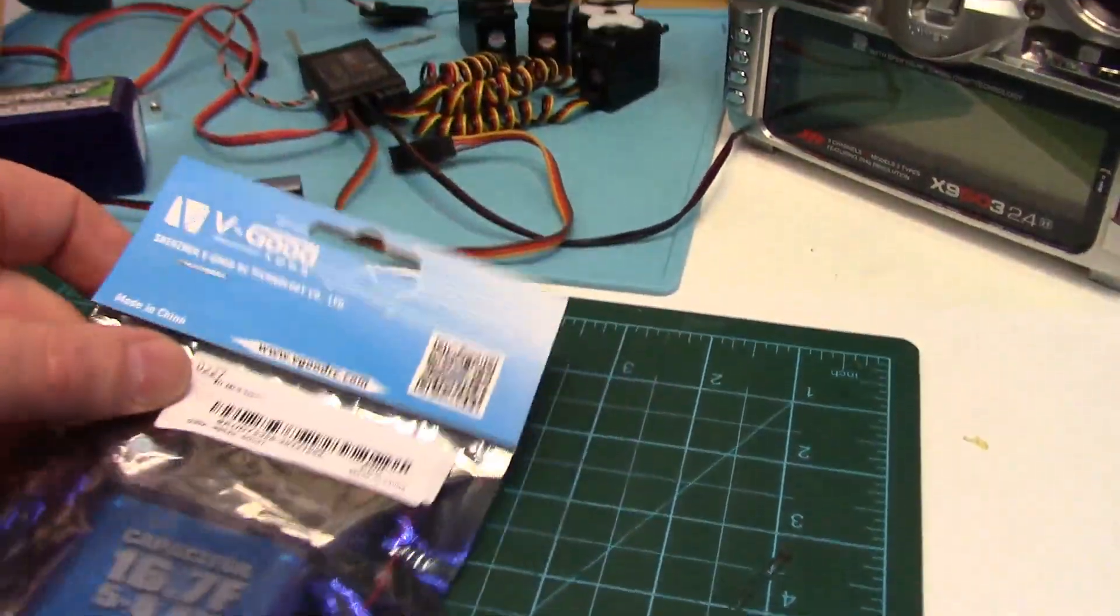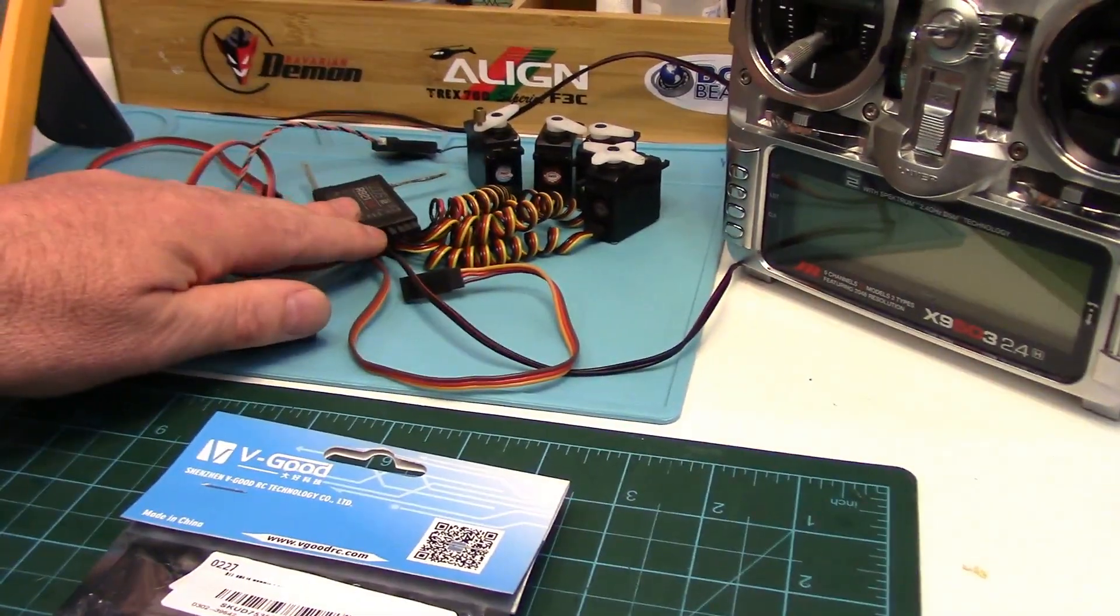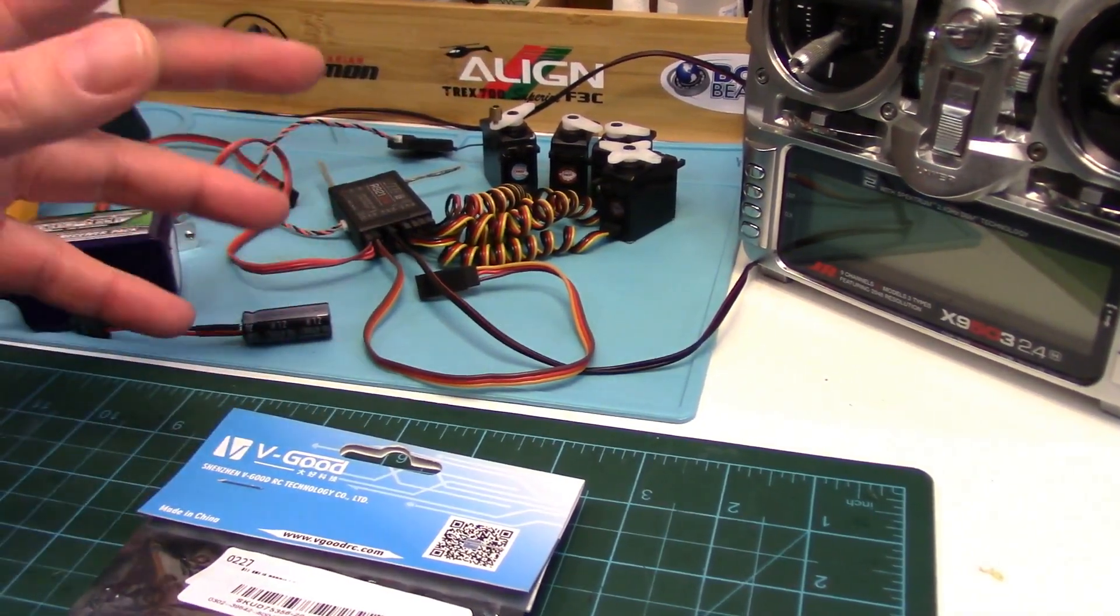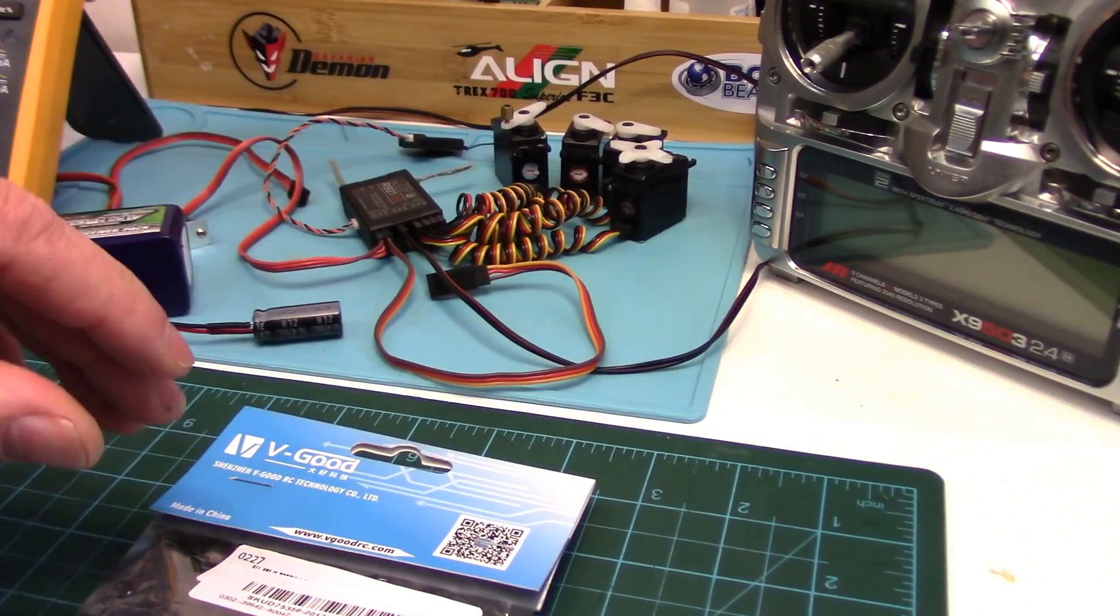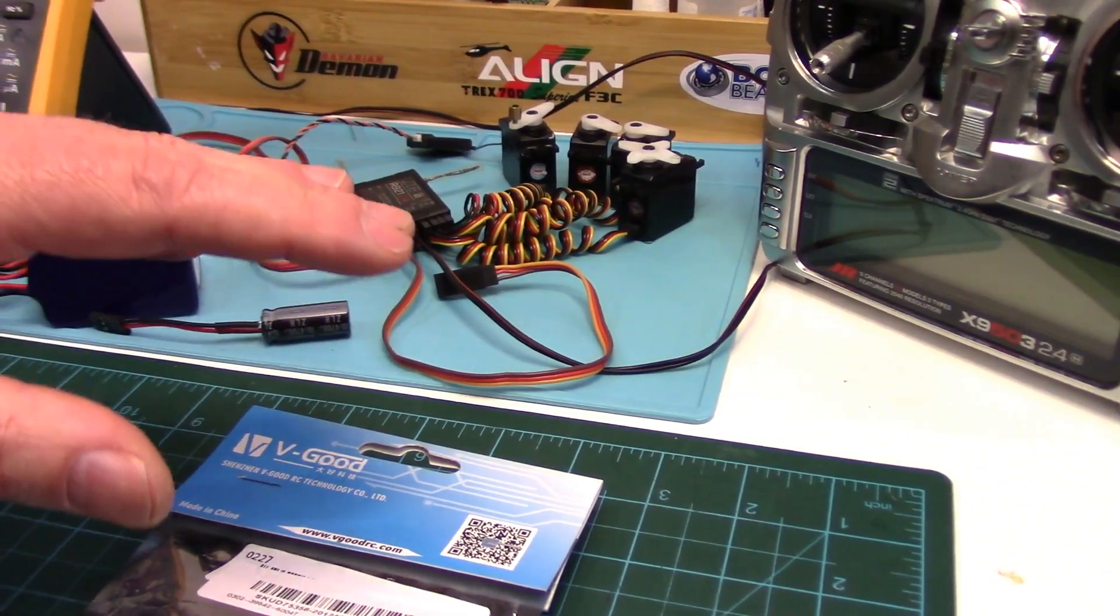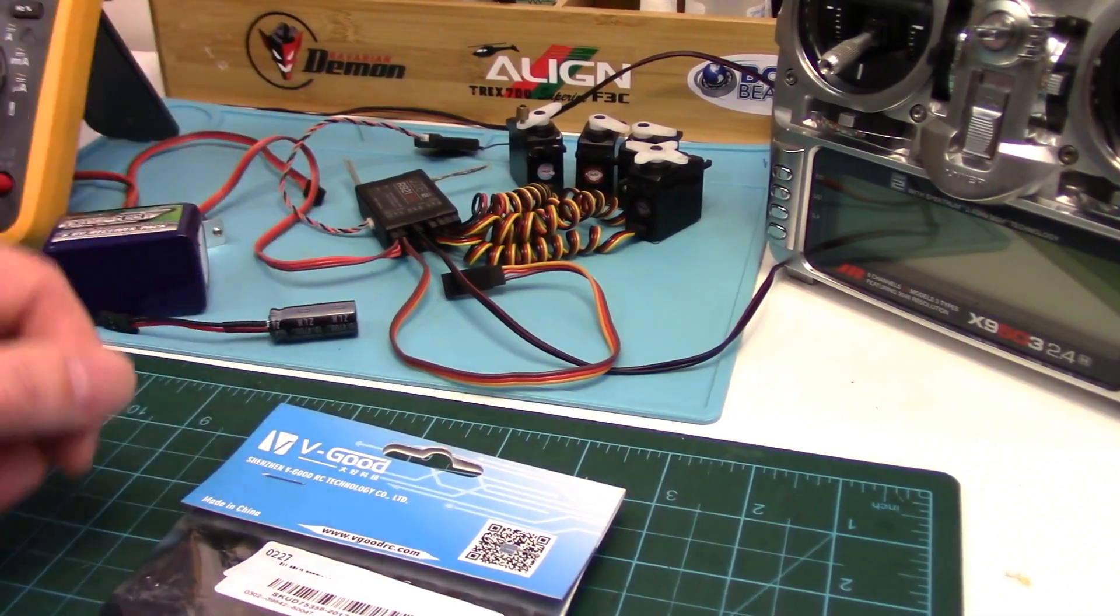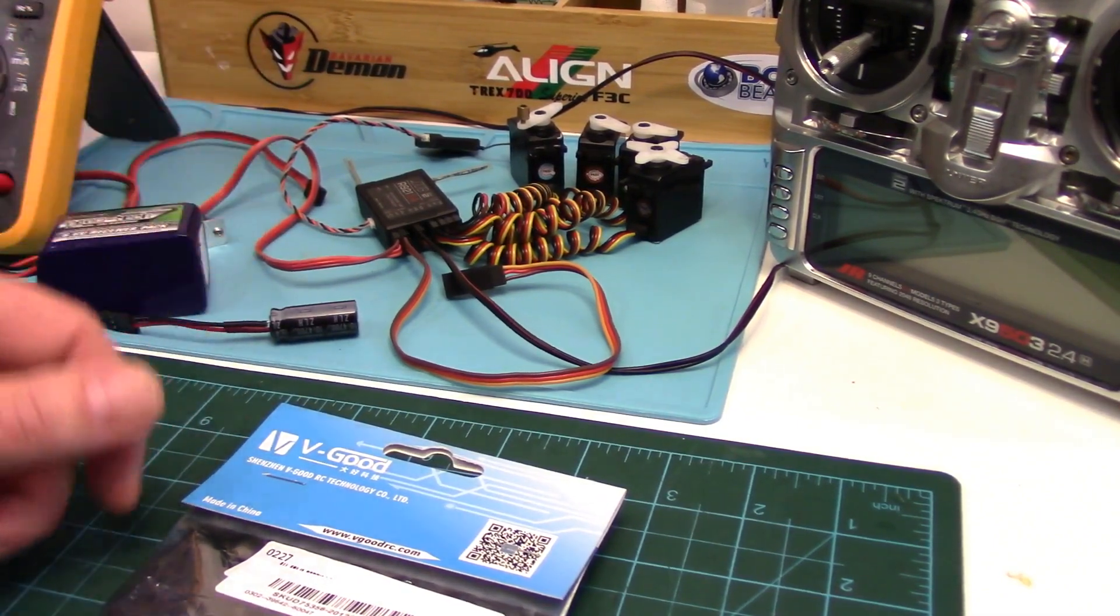Meaning your receiver, your servos, and if you have a flight controller or flybarless system for maybe up to a minute or so, so you can safely land the helicopter or airplane if your BEC fails or your main flight battery craps out.